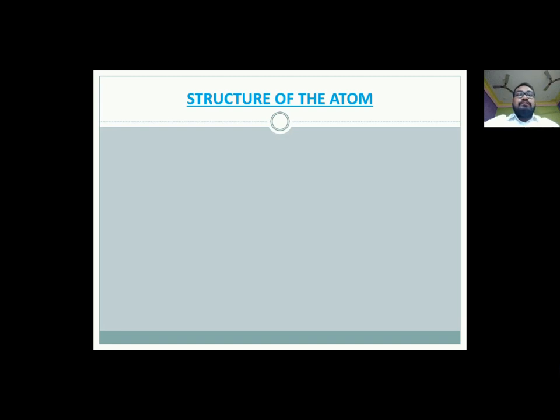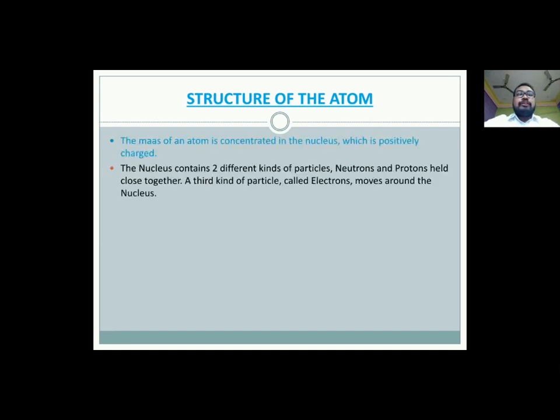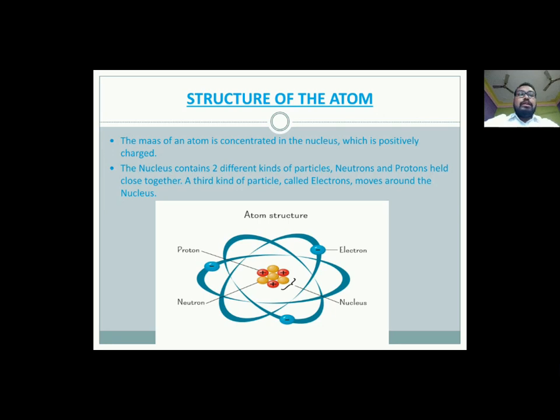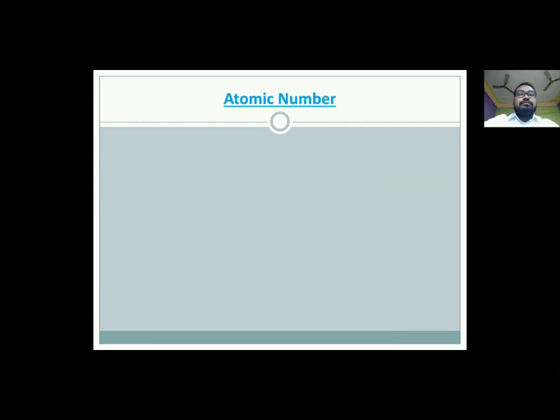Now, we have the structure of the atom. The mass of an atom is concentrated in the nucleus. The nucleus of an atom is positively charged. The nucleus contains two different kinds of particles, neutrons and protons, held close together. A third kind of particles called electrons move around the nucleus. See the image? This is the structure of the atom. Protons and neutrons are embedded inside the nucleus and electrons are revolving around the nucleus in a specific path.